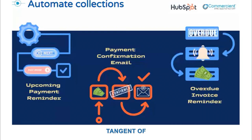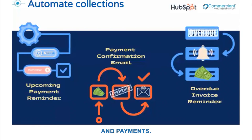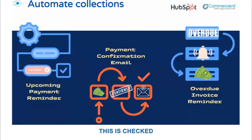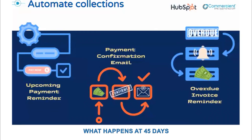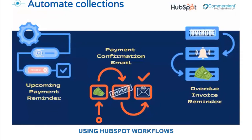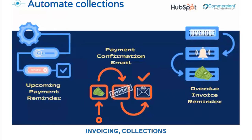I want to quickly go on a short tangent about some workflows that could be incredibly effective in aiding with invoice collection and payments. Imagine this: you create an invoice, you have net-30 payment terms, we are at the 30-day mark and no payment has been received. What's the process? Is this checked manually? Is there an email template for a payment-due reminder? What happens at 45 days? At any point when a customer is past due, would you want to red-flag their account? These tasks can be automated through HubSpot workflows to automate many of your processes around invoicing, collections, and reminders.